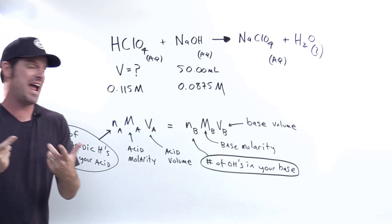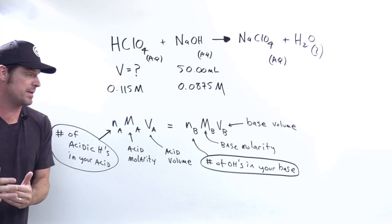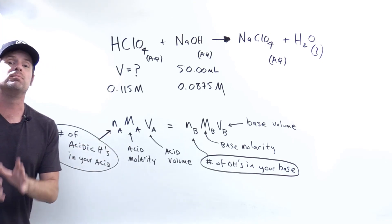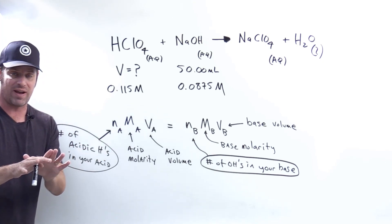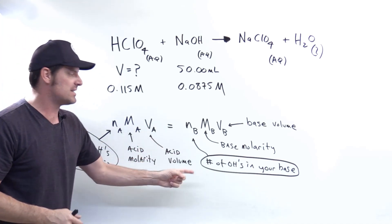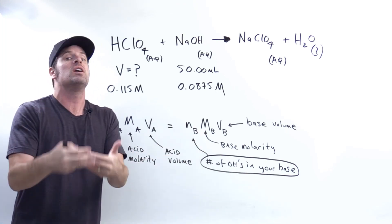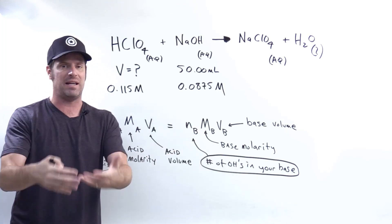NA is the number of acidic H's in your acid's formula. MA is that acid's molarity concentration in moles of acid per liter solution. VA is its volume. NB is the number of OH's in your base. MB is its molarity and VB is your base's volume.